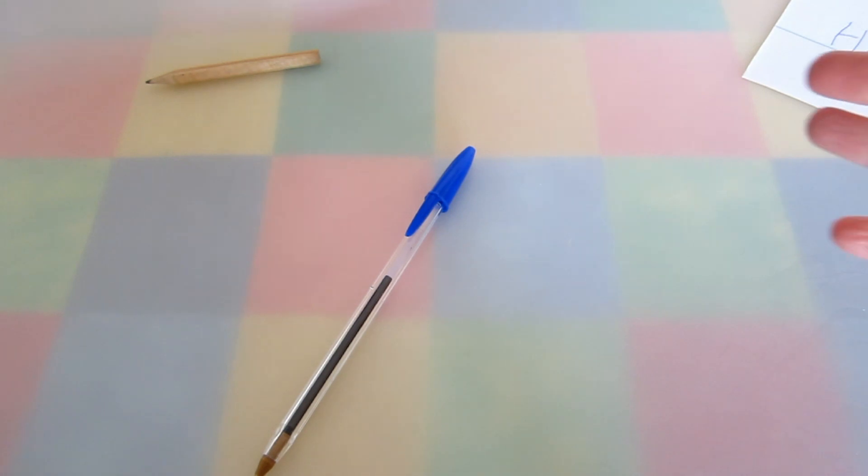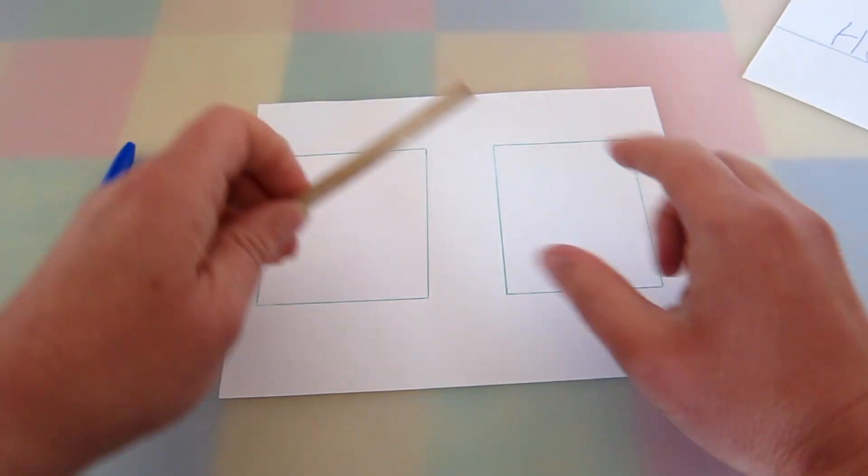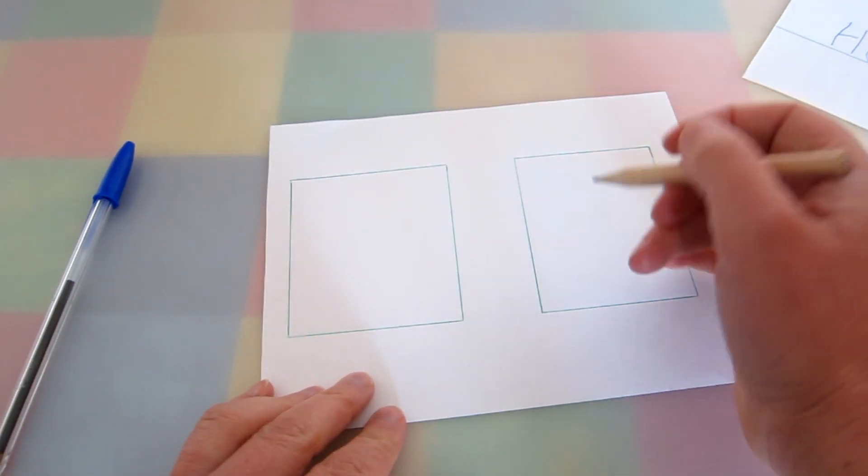There's an easy way to find out whether your friends are right or left-handed. Take these two squares. If you get your friend to shade a square in.